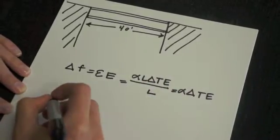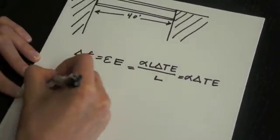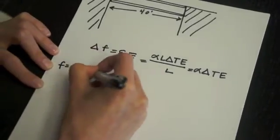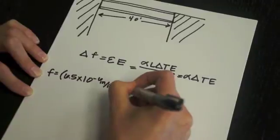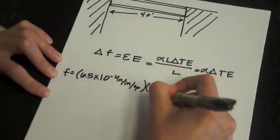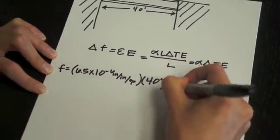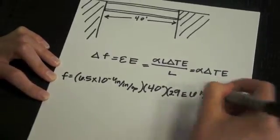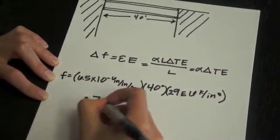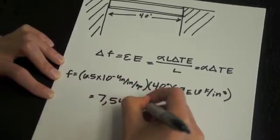As we know from earlier, the coefficient of thermal expansion for steel is 6.5 times 10 to the negative 6 inches per inch per degree Fahrenheit, then multiplied by 40 degrees Fahrenheit and 29 million kips per cubic inch, gives us the total stress of 7,540 pounds per square inch.